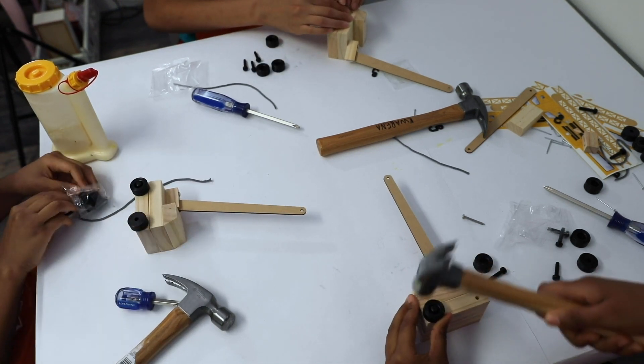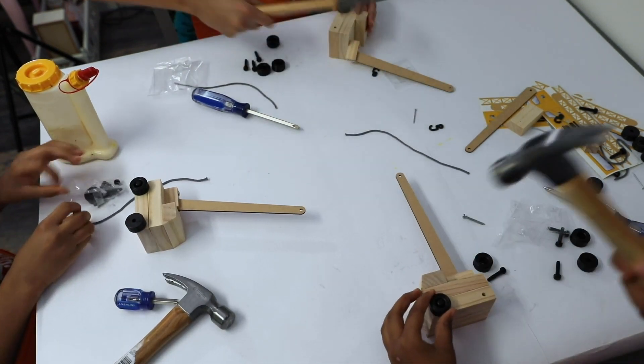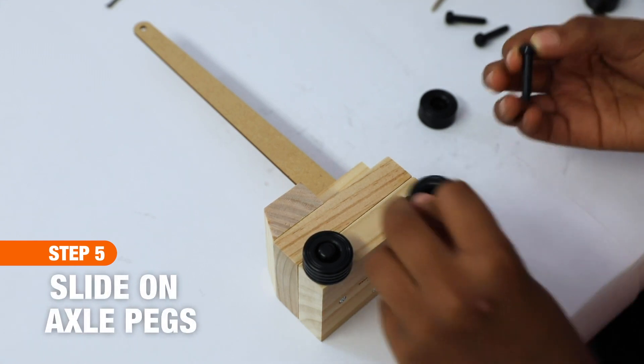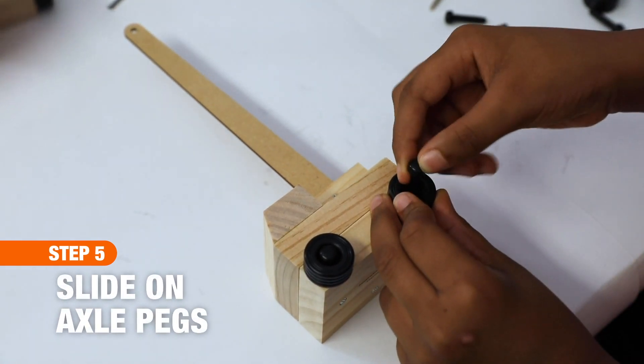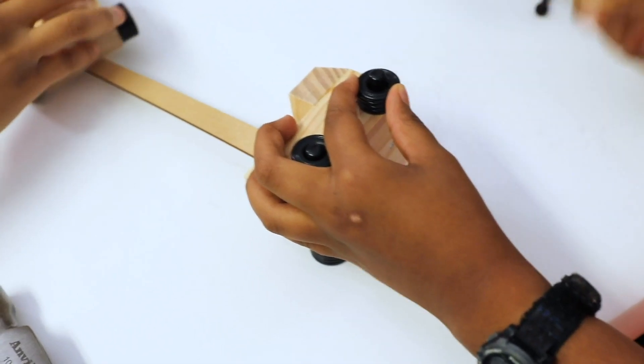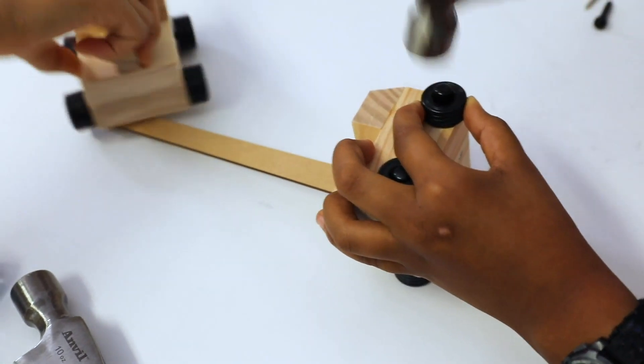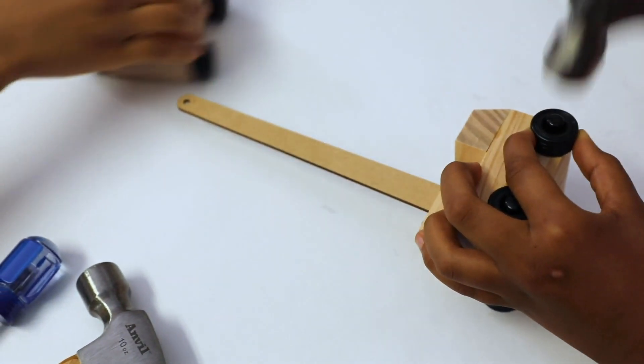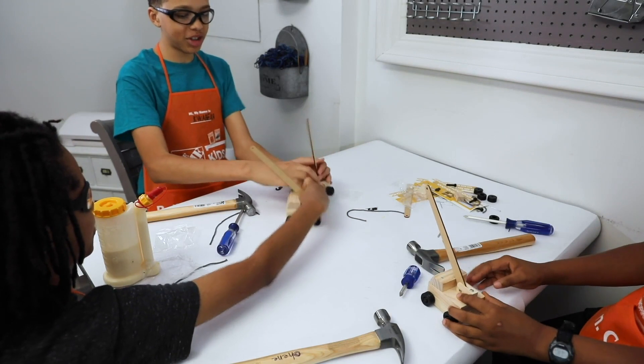For step five, this is the part the kids love putting on the wheels. So slide an axle peg through each of the wheels. Now you can put a dot of glue on the end of each axle peg and then insert them into the peg holes so it doesn't come out. And if you need a hammer, you can go ahead and tap it a few times if necessary.